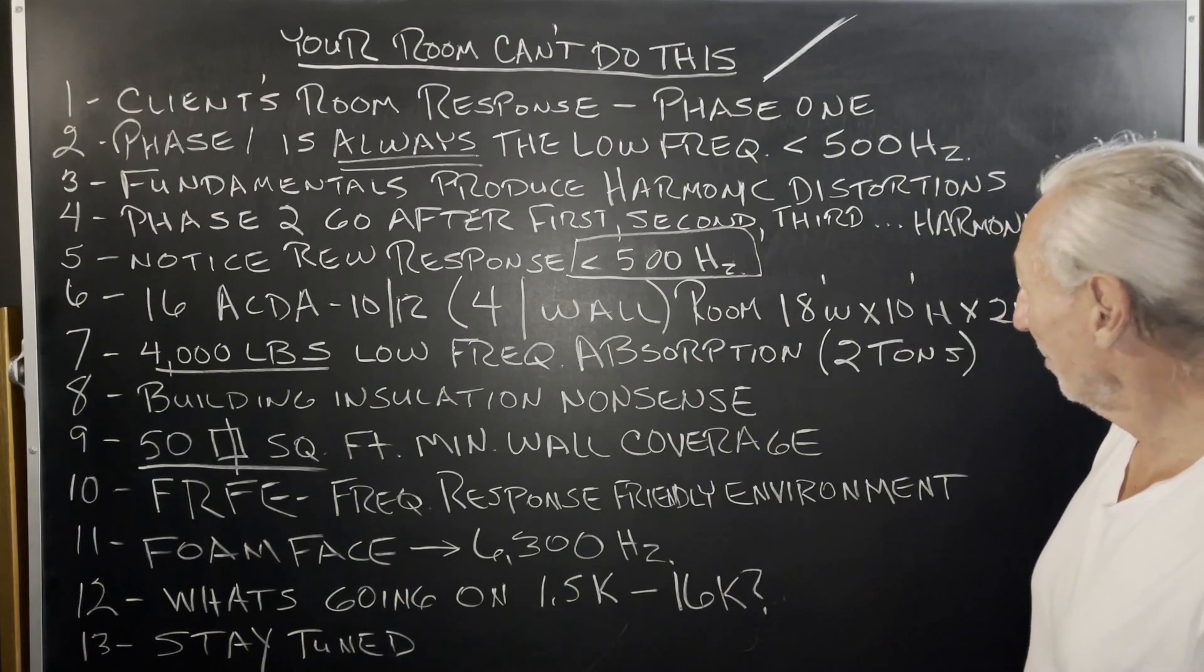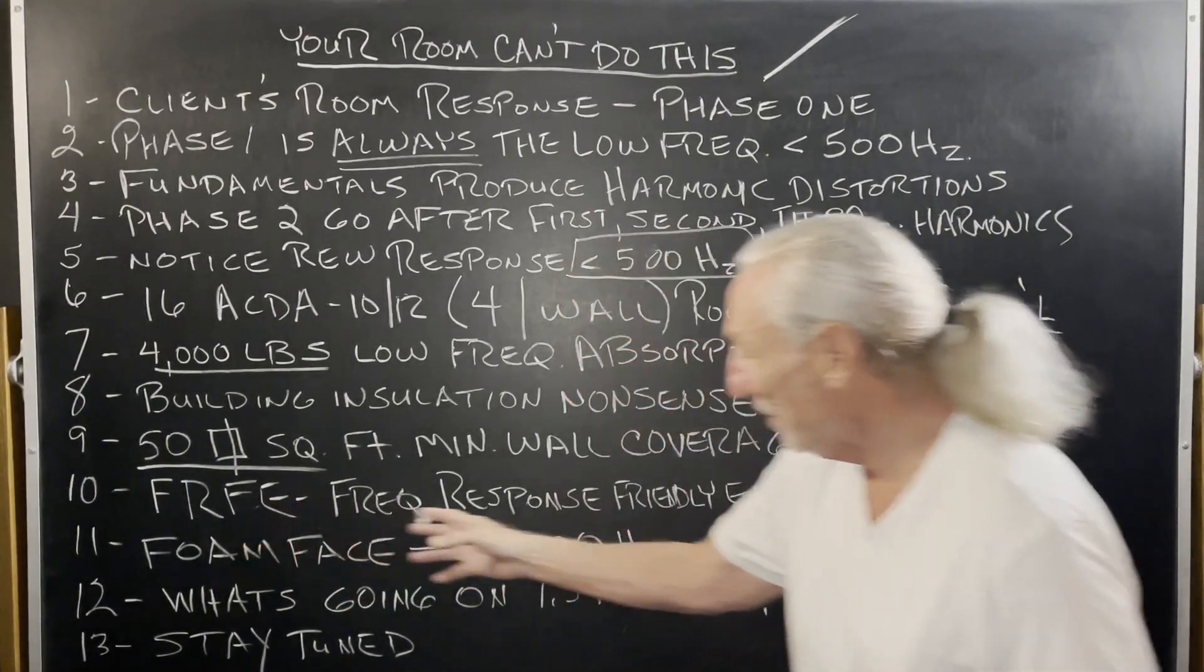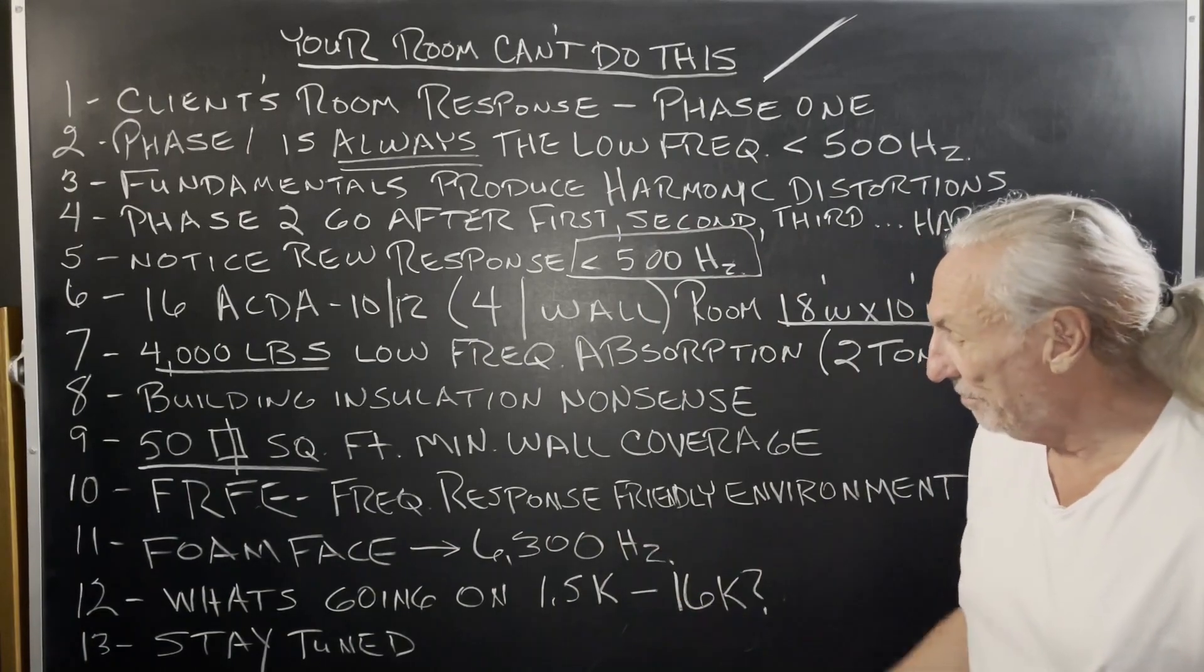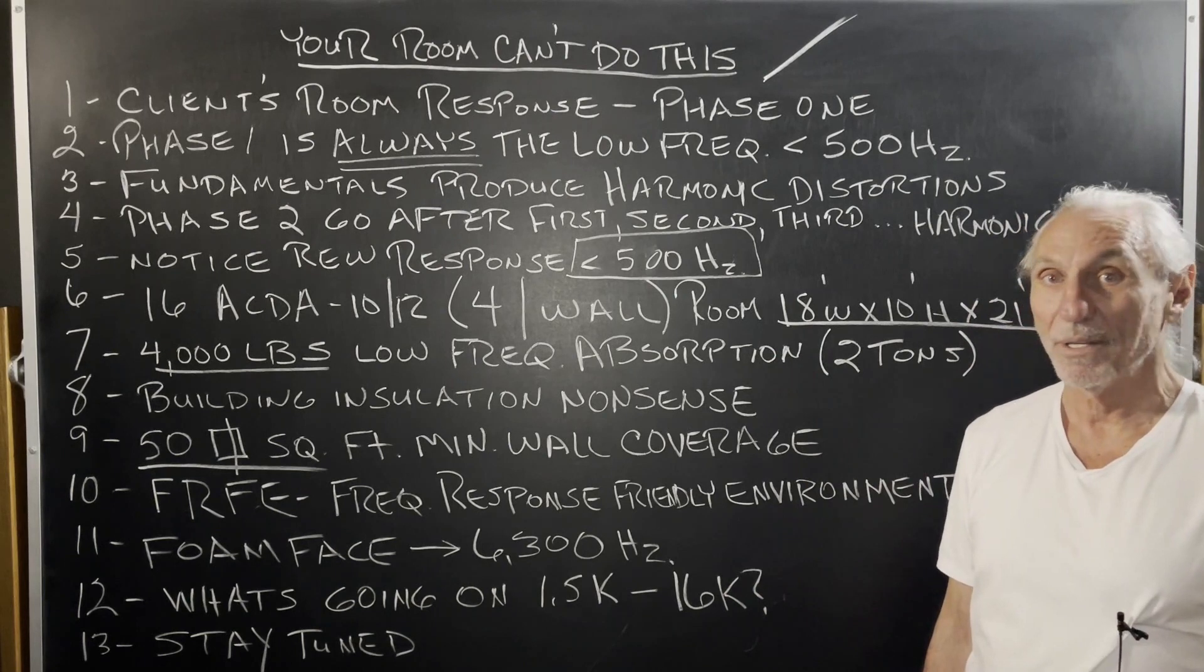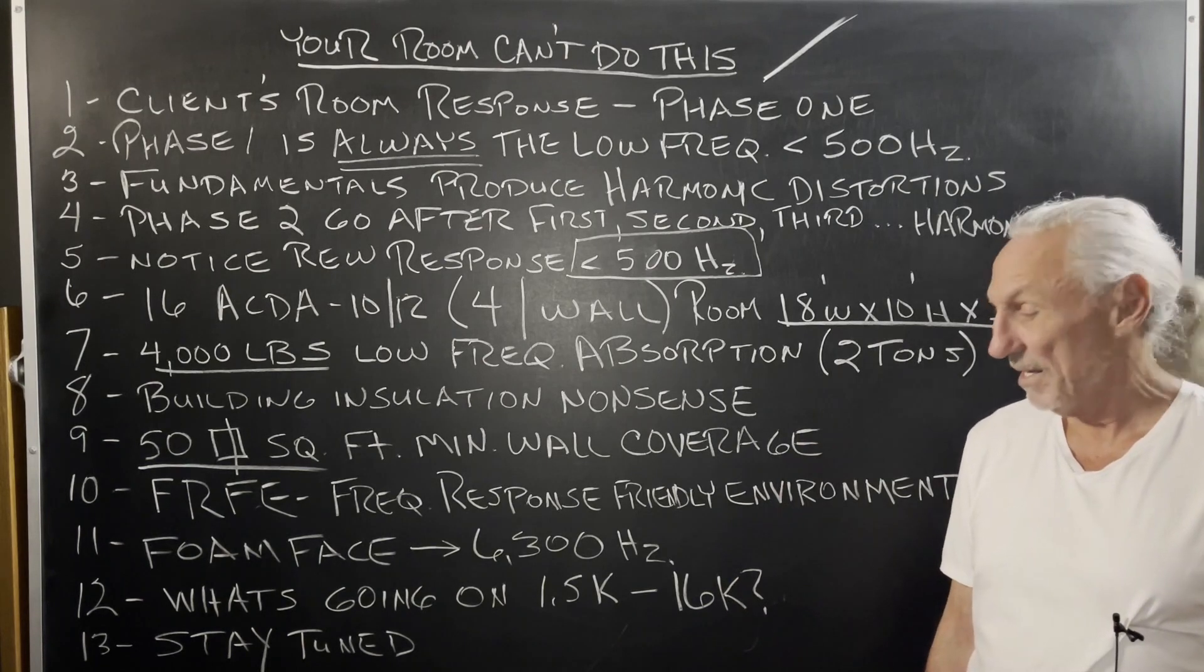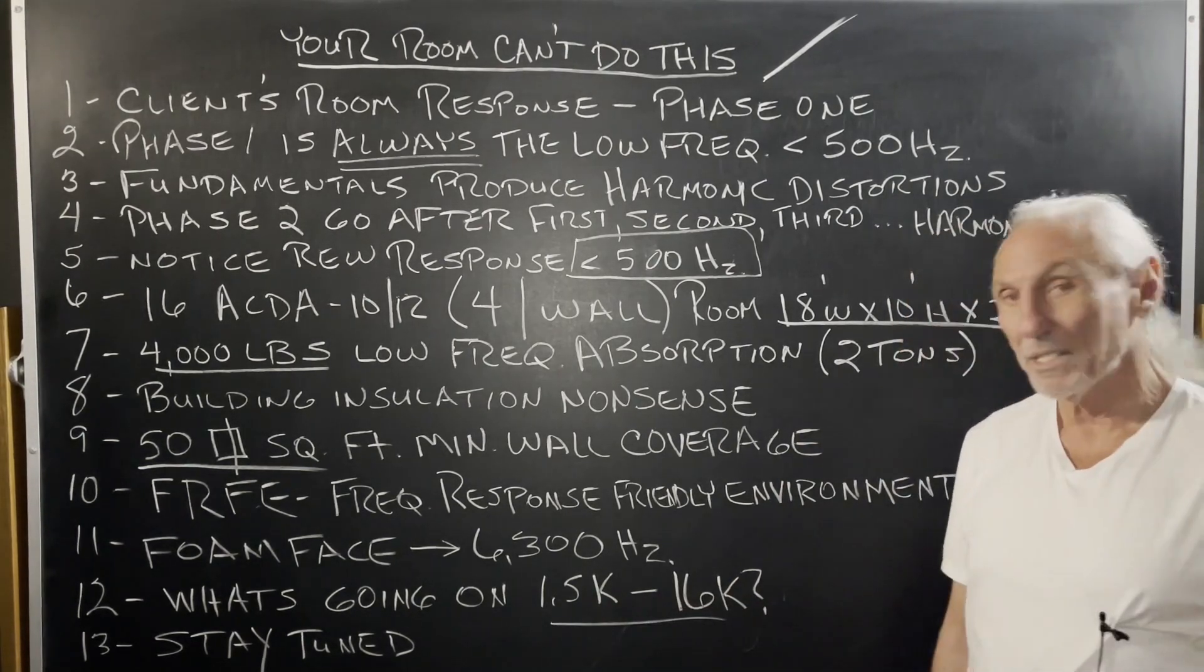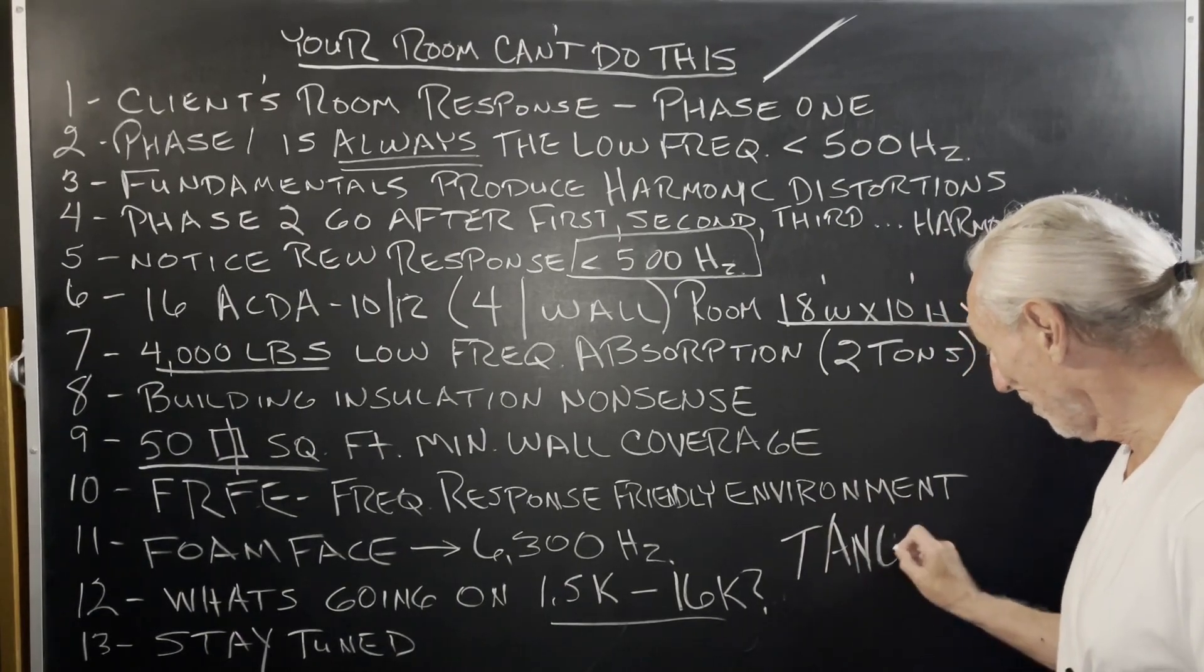All right. So what was the room size? 18, 10, 21. So we really want a frequency response friendly environment. That's what we're up to. The foam on the face. Now, what's going on from 1.5K to 16K? Look at the graph. What do you think? What do you think's going on there? Something we're going to have to treat in a phase two. I want you to think about that. Showing you how to get less than 500. We tamed that one. Now we've got to go above 500 and start working. 500 to 1.5, little issue there. We'll fix that. And then 1.5 to 16K. I'll give you a hint.